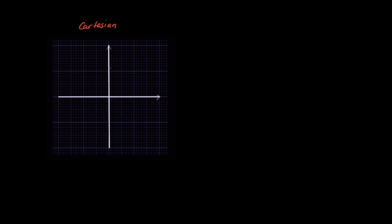Now I'd like to introduce the Cartesian plane. The Cartesian plane — spelled C-A-R-T-E-S-I-A-N — is named after the French mathematician and philosopher René Descartes, an early 17th-century mathematician who extensively used it to bridge algebra and geometry. It is also called the coordinate plane.